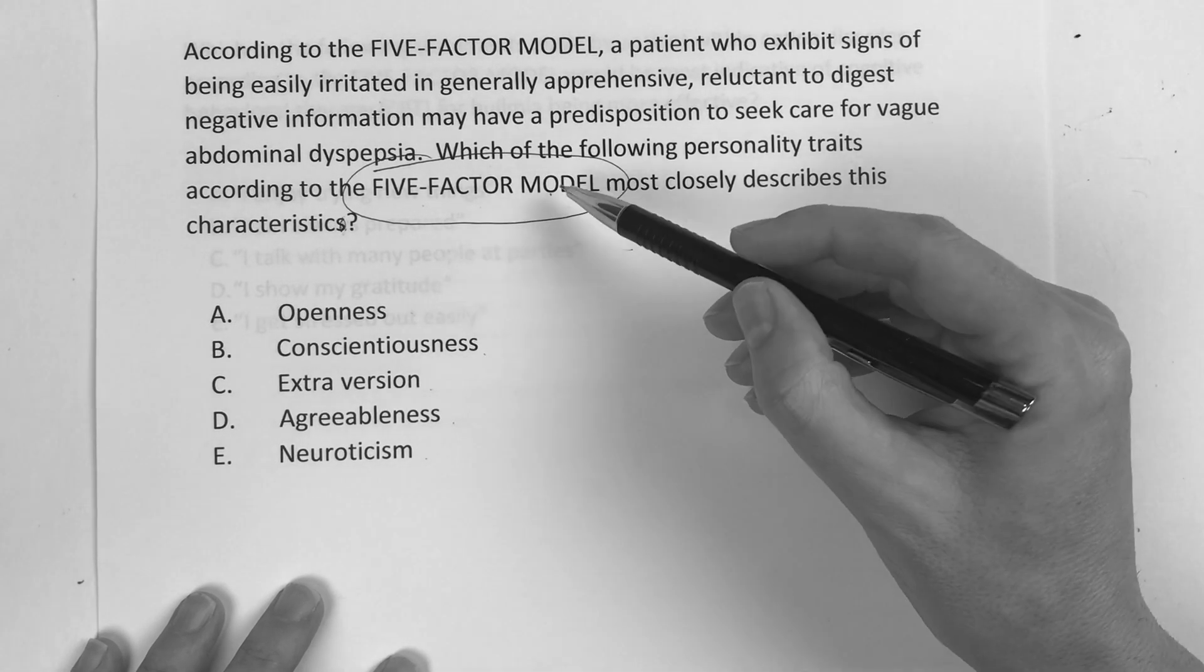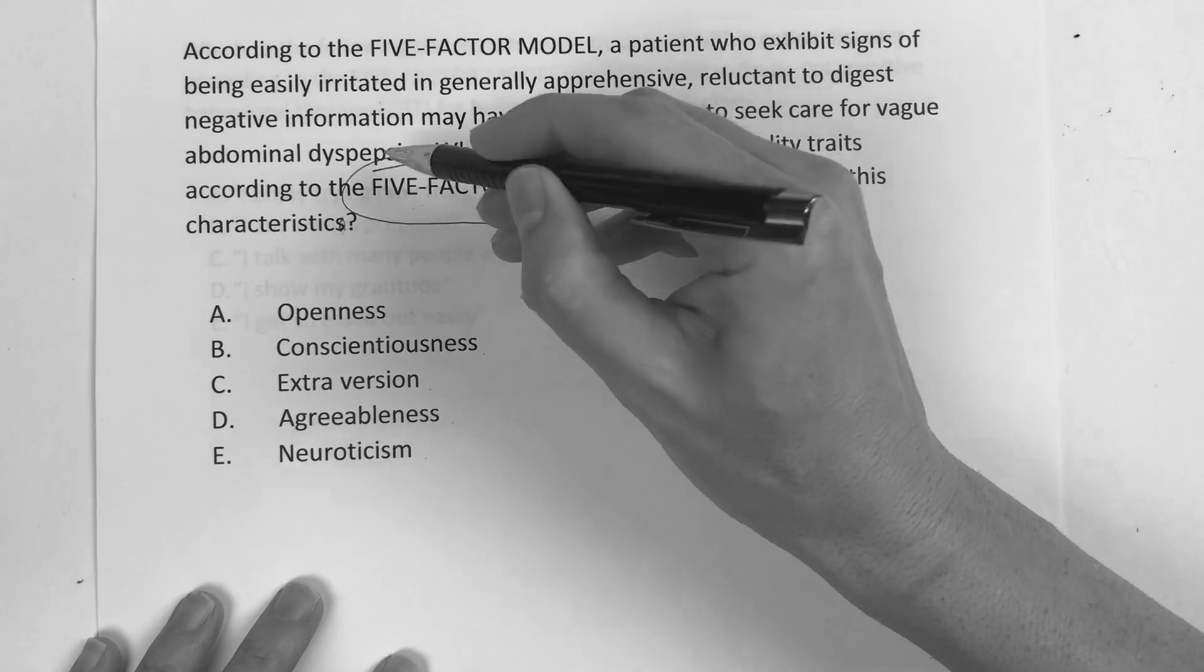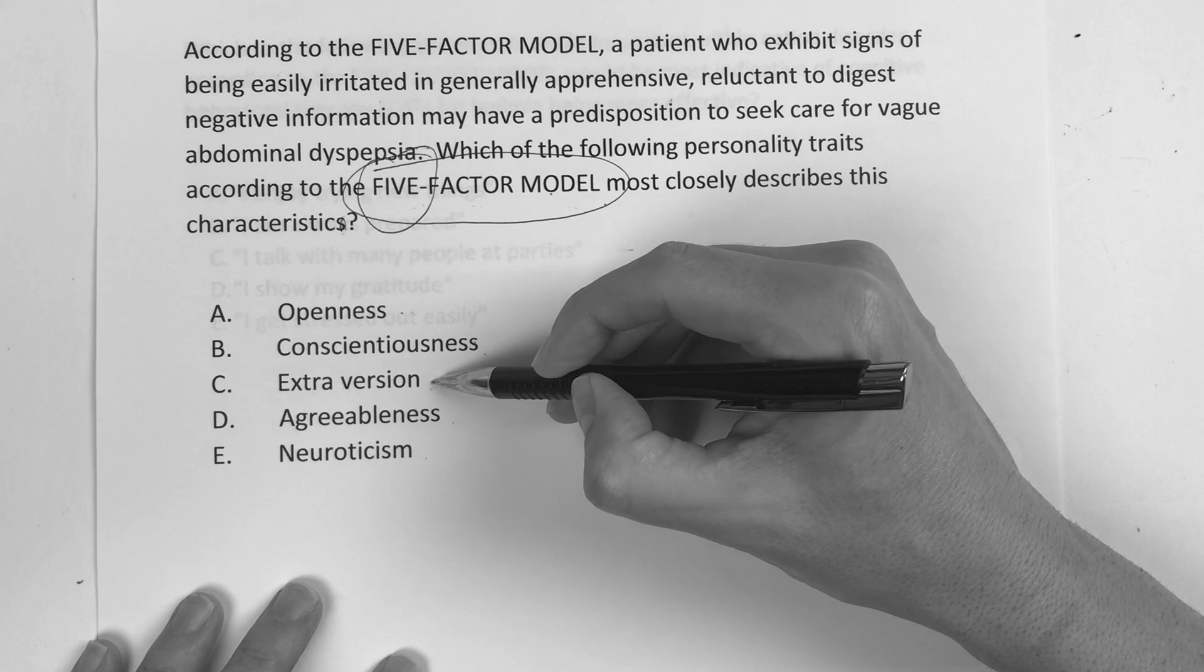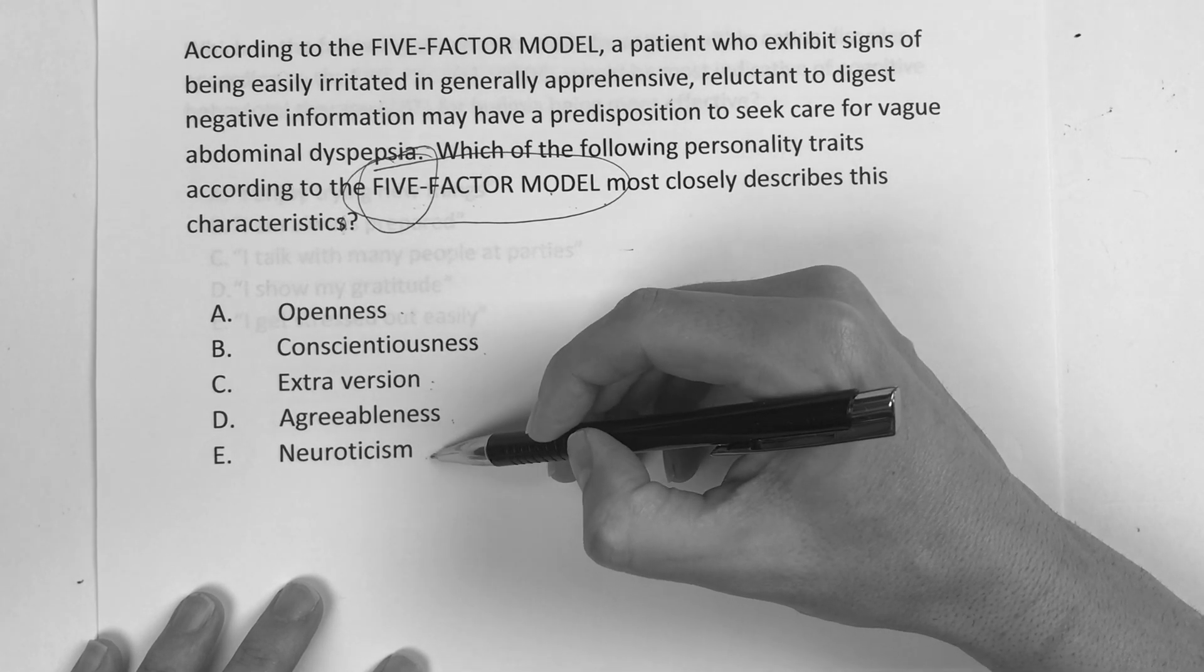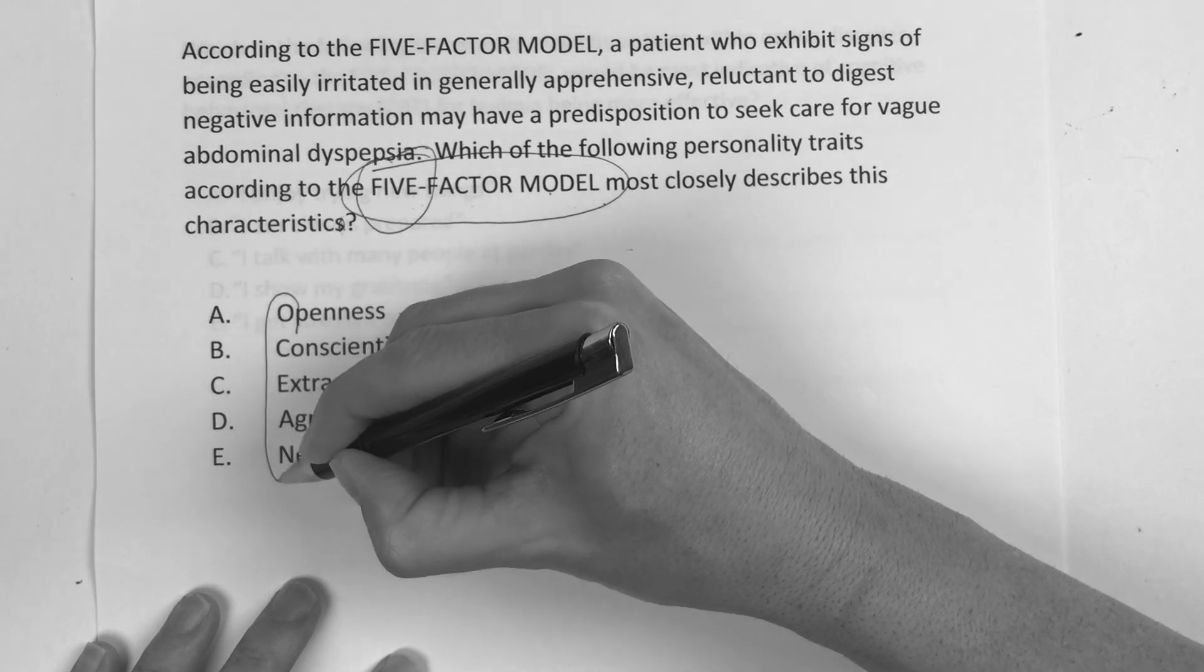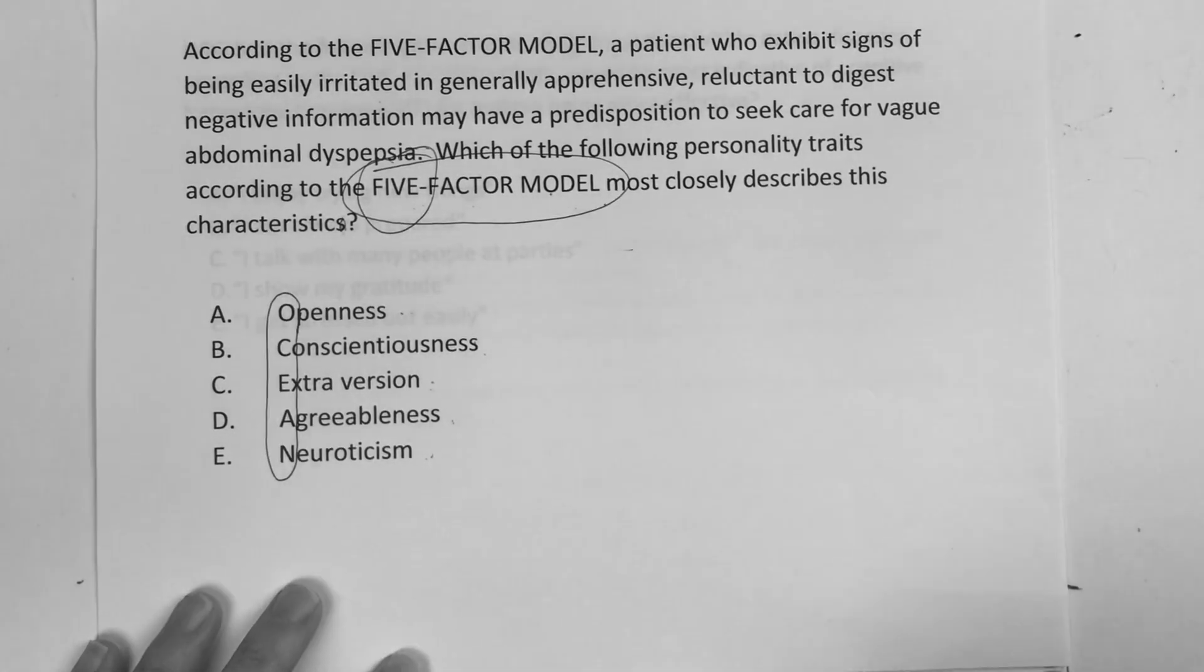Now I can tell you, I made it simple. This five-factor model, there's five of them, and here they are. Openness, conscientiousness, extroversion, agreeableness, and neuroticism. And if you take the first letter of each of those, there's your acronym, OCEAN.